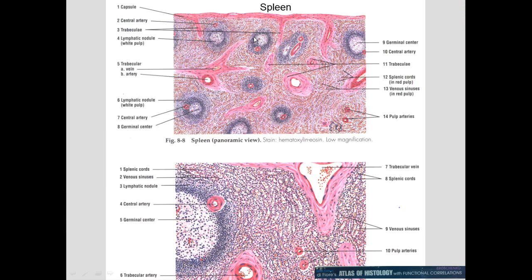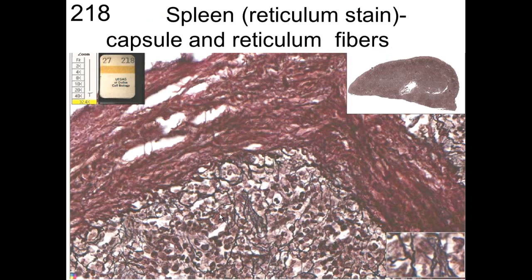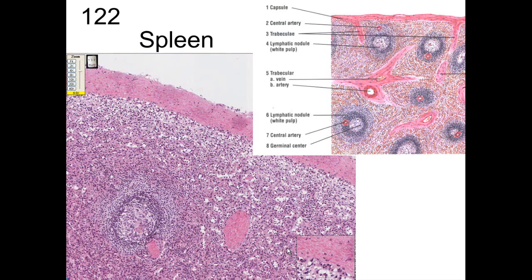The next organ is the spleen, which has a capsule, white pulp, and red pulp, with trabeculae projecting through for support. In the white pulp there is a germinal center and a central artery, around which is a periarterial lymphocyte sheath. The spleen also has a reticular fiber network visible with silver staining, providing support as lymphocytes percolate through.